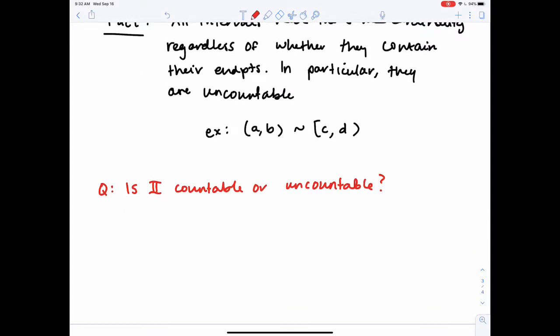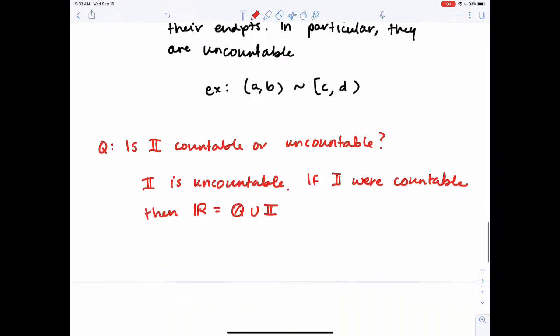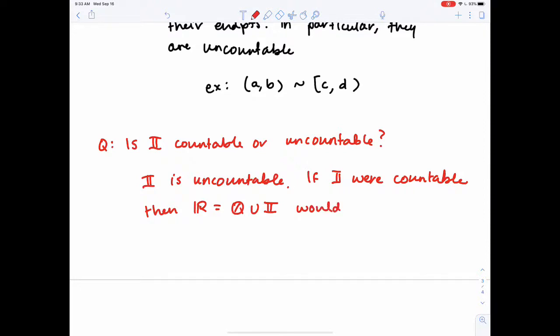The answer to this question is that ℐ is uncountable. If ℐ were countable, then taking ℝ, that would be the union of two countable sets. And one of the results you're proving in your homework this week is that the union of countable sets is again countable. This would be countable. So we'd be saying that the reals are a countable set since it's the union of countable sets. And that's a contradiction because we've already proven that ℝ is uncountable.